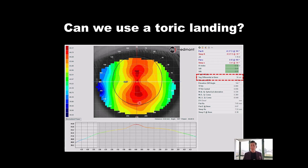Remember, anybody 30 microns or greater — you can generally fit a toric and have improved landing, improved alignment, improved centration, comfort, all those things.